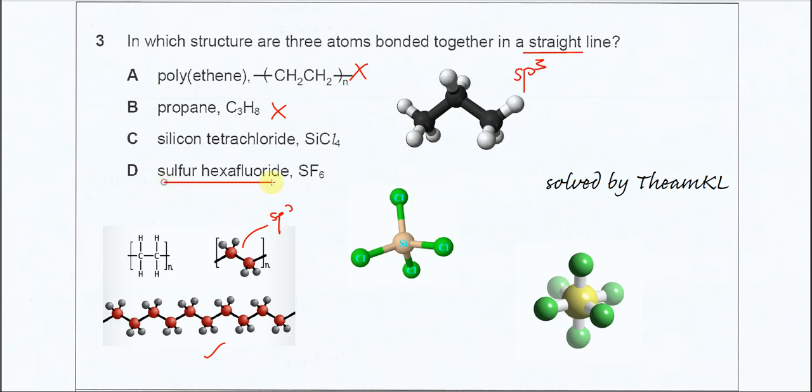For D, sulfur hexafluoride, SF6. We know that sulfur is the central atom with six fluorine atoms surrounding it. The fluorine, sulfur, and fluorine can form a straight line. Therefore, the answer is D, SF6. That's all for this question. Thank you.